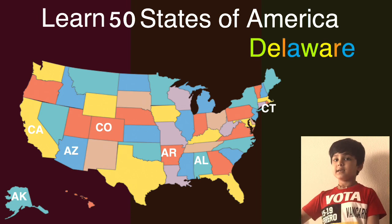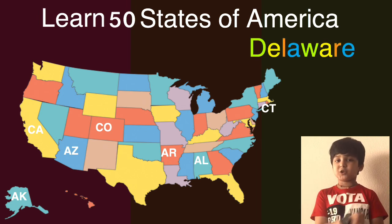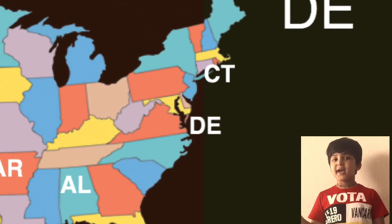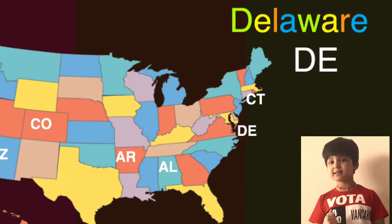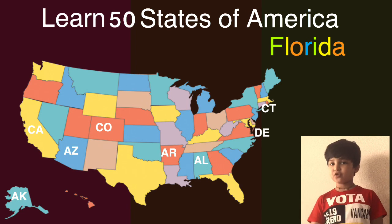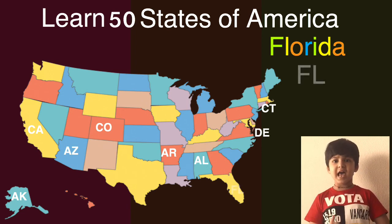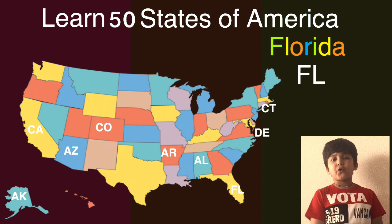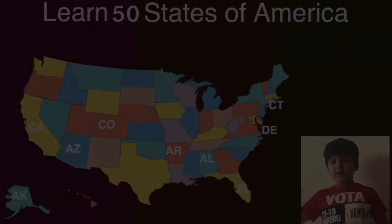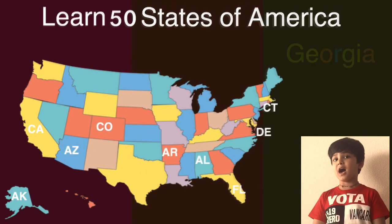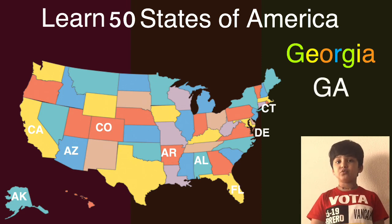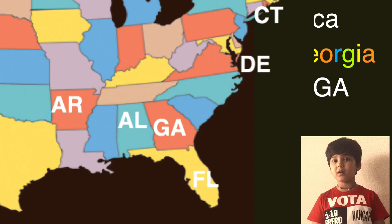The next one is Delaware and the short one is DE. Here comes Delaware on the map, can you guess what will come next? The next one is Florida and the short one is FL. Here comes Florida on the map. Next one is Georgia and the short one is GA. Here comes Georgia on the map, can you guess what will come next?